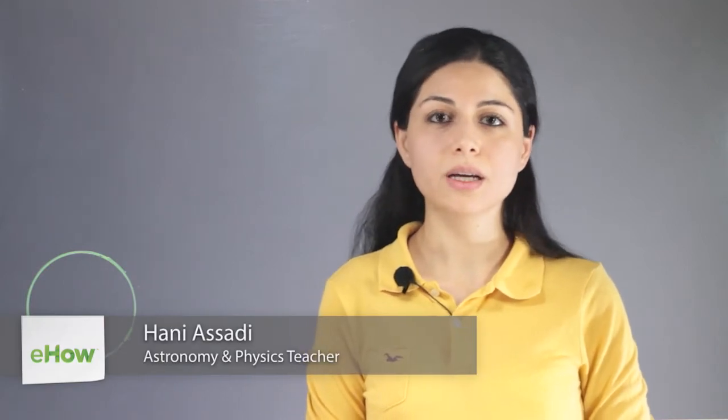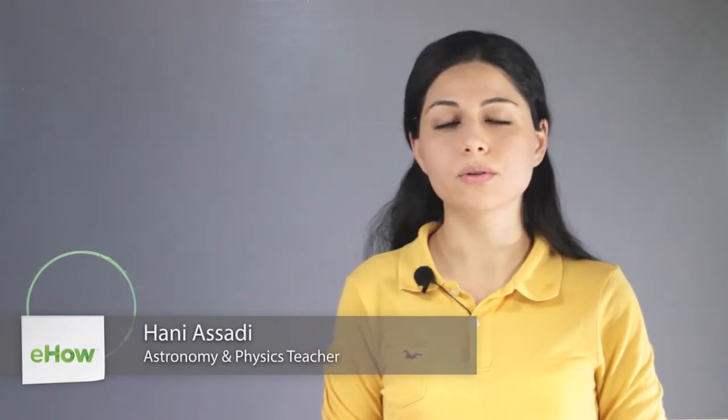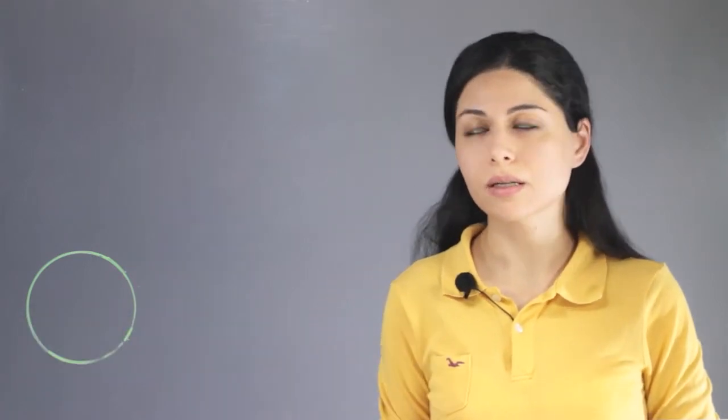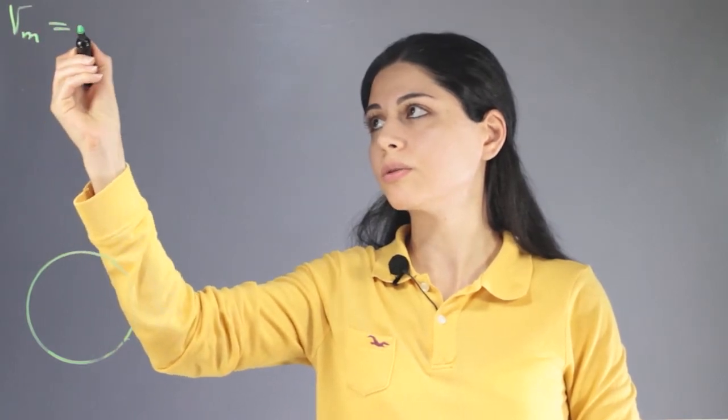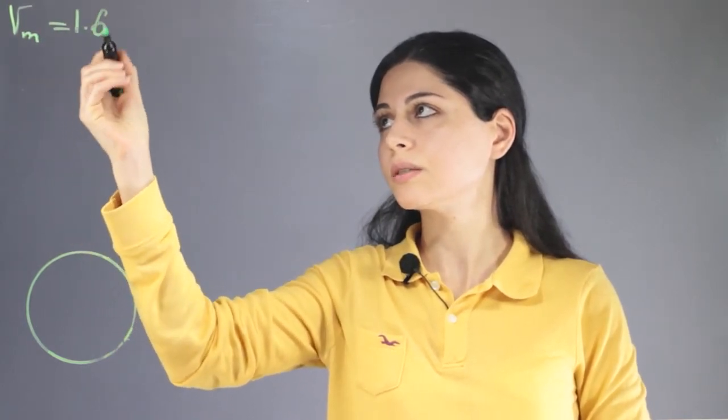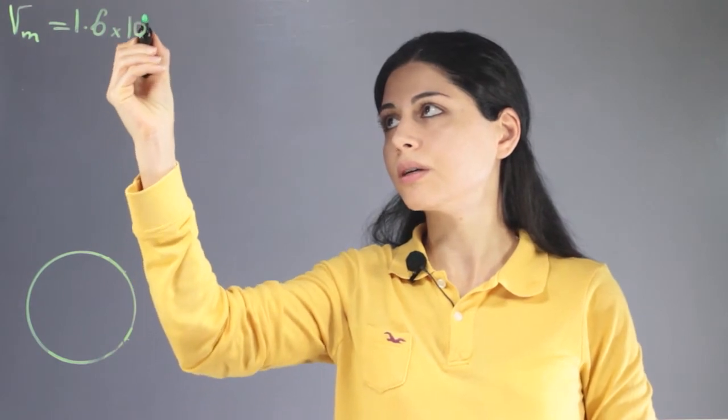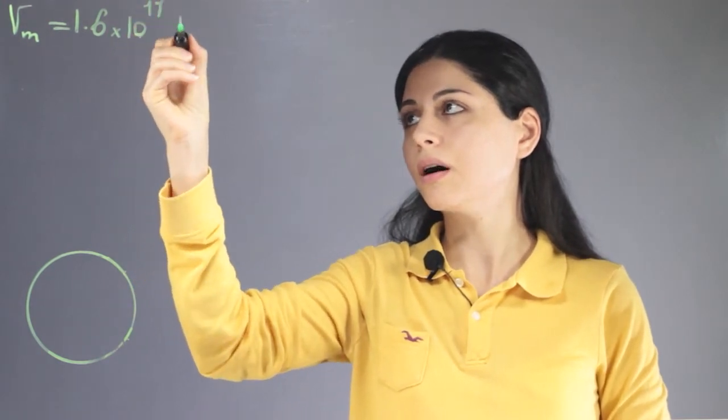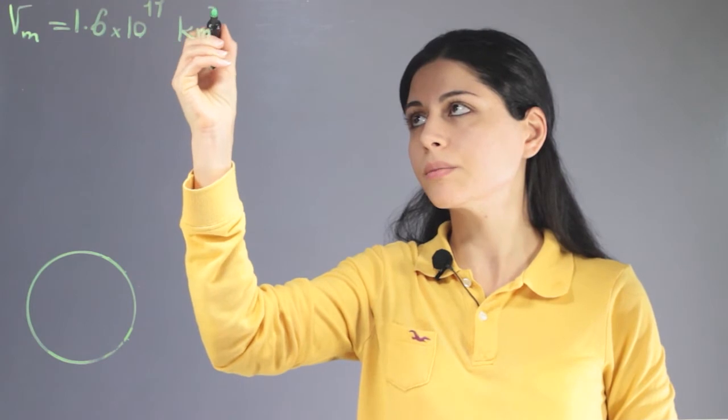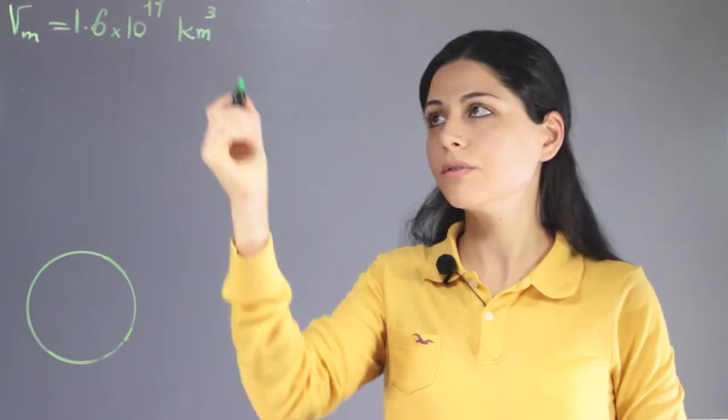Hi, my name is Hani, and this is what is the approximate volume of Mars. The approximate volume of Mars is about 1.6 times 10 to the 11 kilometer cubed.